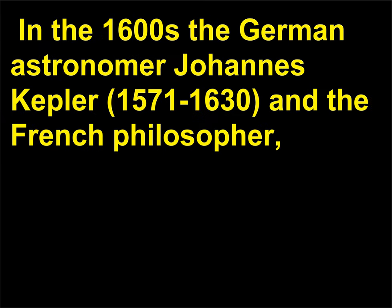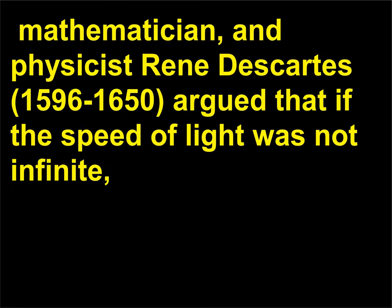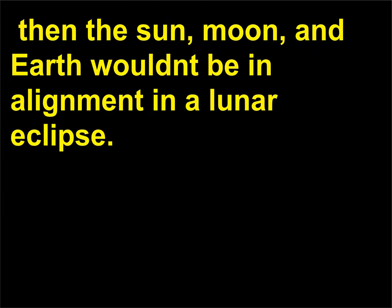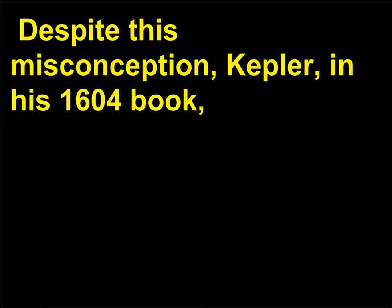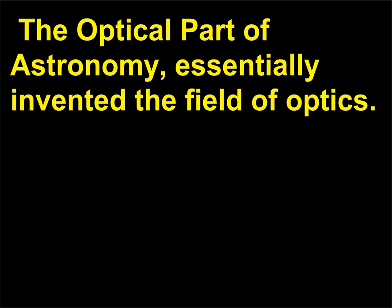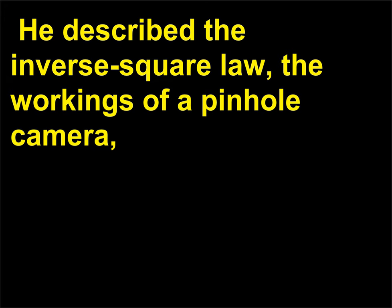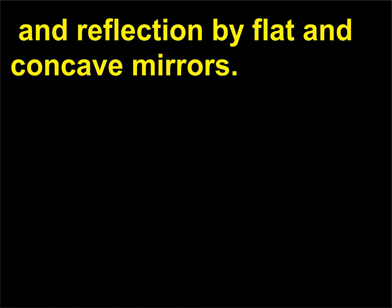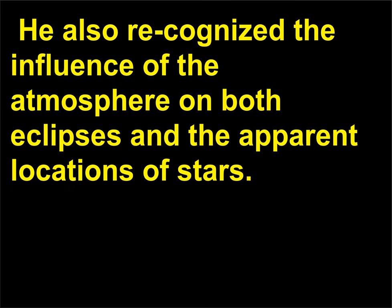In the 1600s the German astronomer Johannes Kepler (1571-1630) and the French philosopher, mathematician, and physicist René Descartes (1596-1650) argued that if the speed of light was not infinite, then the sun, moon, and earth wouldn't be in alignment in a lunar eclipse. Despite this misconception, Kepler, in his 1604 book The optical part of astronomy, essentially invented the field of optics. He described the inverse square law, the workings of a pinhole camera, and reflection by flat and concave mirrors. He also recognized the influence of the atmosphere on both eclipses and the apparent locations of stars. Willebrord Snellius (1580-1626) discovered the law of refraction, Snell's law, in 1621. Descartes used Snell's law to explain the formation of rainbows shortly thereafter.